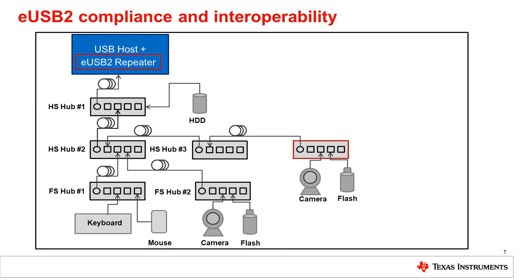So in USB 2.0, there are up to 5 tiers of hubs possible. If you have an eUSB2 repeater, that would count as one of those tiers. In the modified interoperability tree shown here, the host implements an eUSB2 repeater, and the tree is simply reduced by one hub tier. All the same device speeds, traffic, and cable links remain the same. Likewise, when running USB 2.0 electrical compliance, an eUSB2 repeater would act similar to a hub, with packets having allowable end-of-packet dribble and drop synchronization bits at the beginning of each packet.